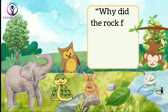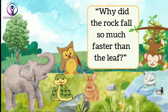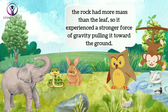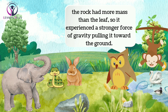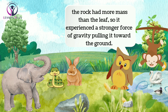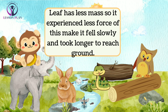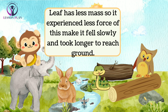"Why did the rock fall so much faster than the leaf?" Rabbit asked. Owl explained that the rock had more mass than the leaf, so it experienced a stronger force of gravity pulling it towards the ground. This made it accelerate faster as it fell, so it reached the ground in less time than the leaf did. The leaf, on the other hand, has less mass, so it experienced a weaker force of gravity, making it fall more slowly and take longer to reach the ground.